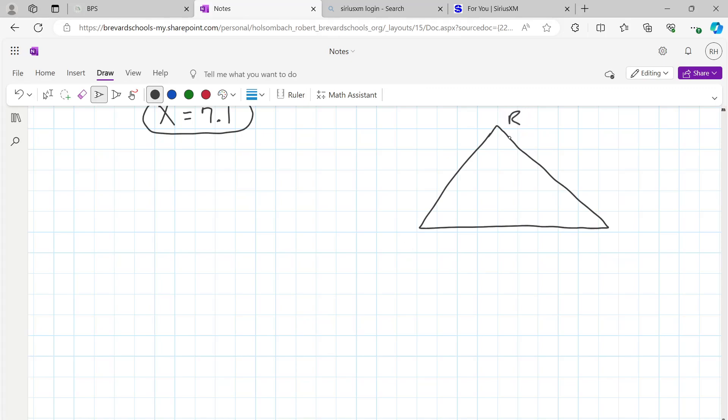We got vertices R, Q, and S. Q is 37 degrees, RQ is 8, S is 54. And we're trying to find x, which represents side QS. So as you look at this problem after doing the first two examples, is there anything that you see that's missing? Any piece of information missing?